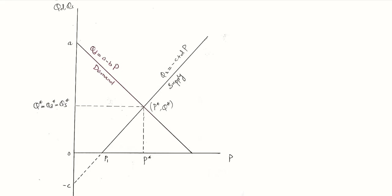Price is on the x-axis and quantity demanded and quantity supplied is on the y-axis. This makes it a proper dependent-independent variable allocation because qd is a function of p and qs is also a function of p. However, in our usual practice in economics we make the inverse demand function where we place price on the y-axis. Here we have a proper demand function where qd is expressed on the y-axis and p is expressed on the x-axis as per their roles as dependent and independent variables.